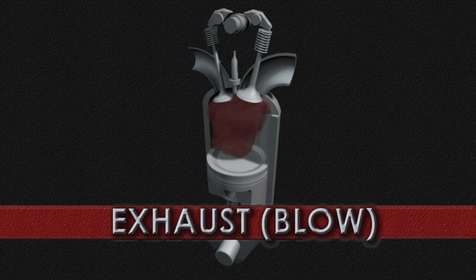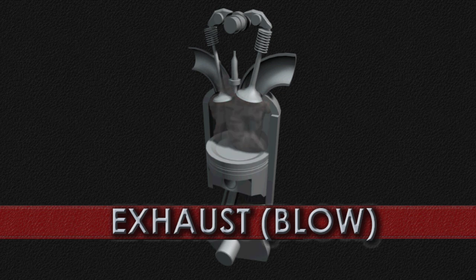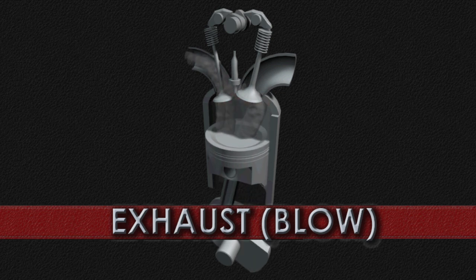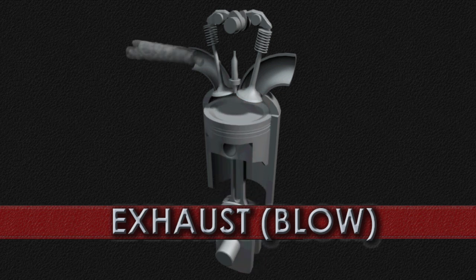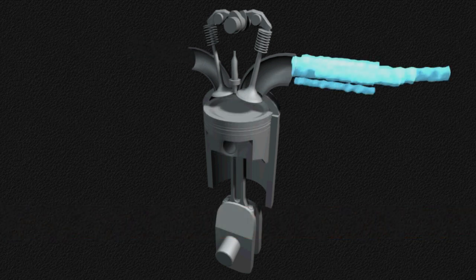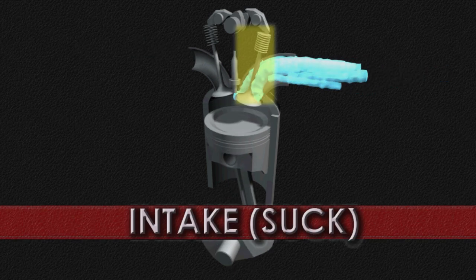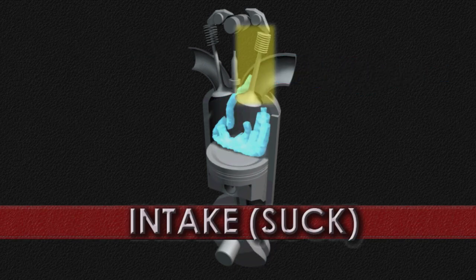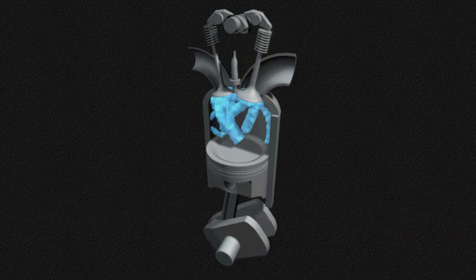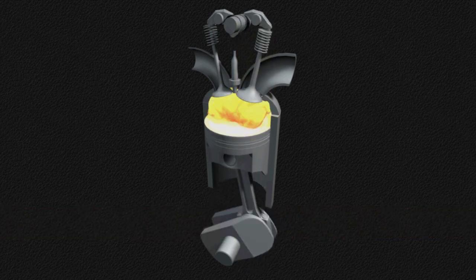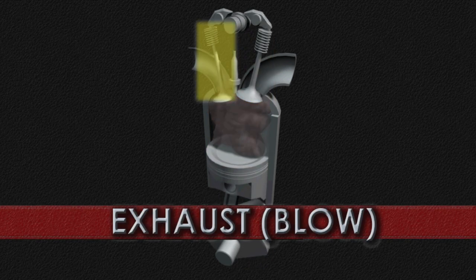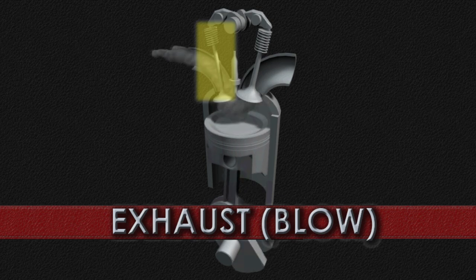The fourth and final stroke moves the piston up, pushing the exhaust out of the combustion chamber. During this cycle, the exhaust and intake valves open and close at appropriate times to allow for fuel mixture intake, its compression, and exhaust to be blown out.